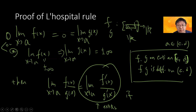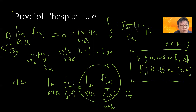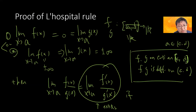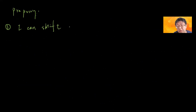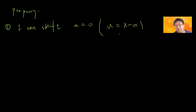Let's do some pre-processing to shorten the proof. First, since a is arbitrary, I can assume without loss of generality that a = 0. If that's not the case, I just let u = x − a and do a change of variable, shifting a to zero.